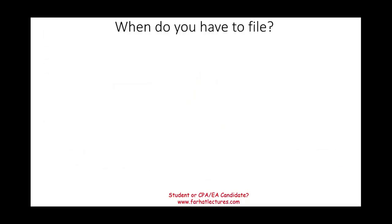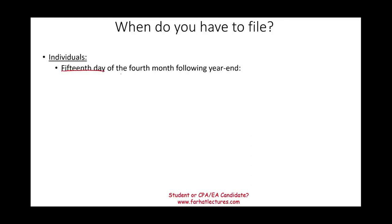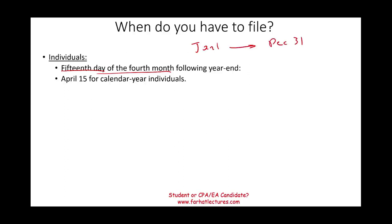Now, when do you have to file? For individuals, it's April 15th — but the rule is it's the 15th day of the fourth month following the year. So assuming the calendar year — January 1st through December 31st — you go four months: January, February, March, April. The 15th day of the fourth month is April 15th.